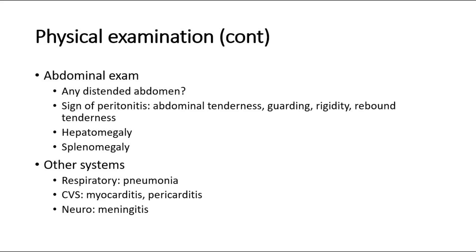Other systemic examinations to look for complications: respiratory system — look for pneumonia; cardiovascular examination — look for myocarditis with signs of acute decompensation of heart failure such as gallop or mitral regurgitation, and pericarditis by auscultating for a pericardial friction rub; neurological examination — look for meningitis with meningeal irritation signs such as neck stiffness, headache, and photophobia.